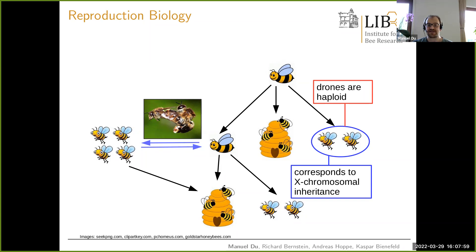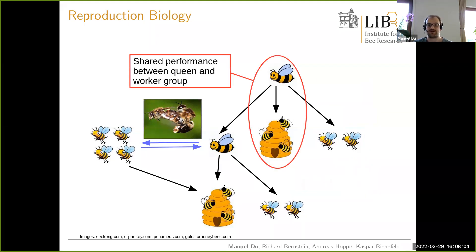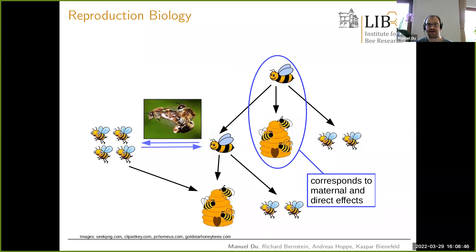The next challenge is that most breeding traits are not performed by the queen alone or workers alone, but are a shared effort. For example, in honey yield it is the workers who collect nectar, but the queen determines how many workers are in the colony through her egg-laying frequency, and more workers means more honey. This system of shared performance corresponds in other farm animals to maternal and direct effects — similar to weaning weight in piglets, which depends both on the piglet's growing ability and the sow's feeding ability.